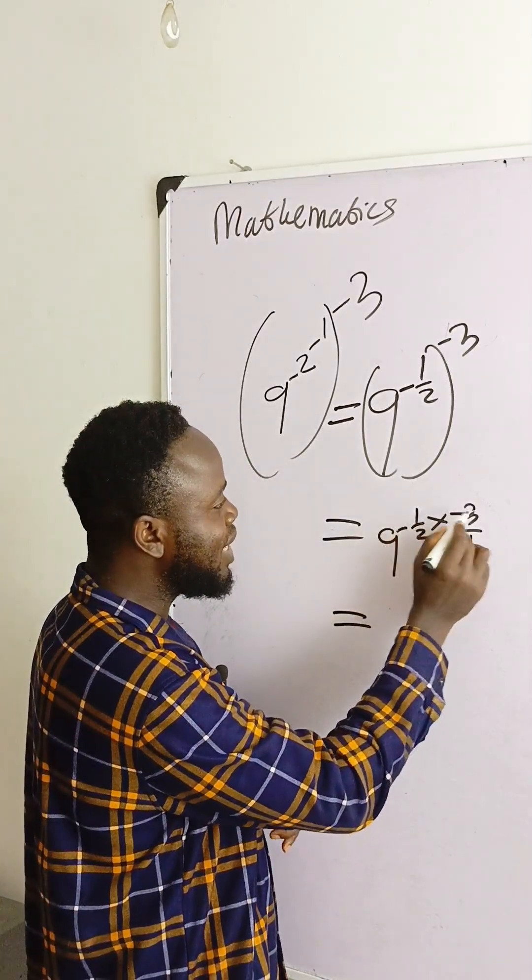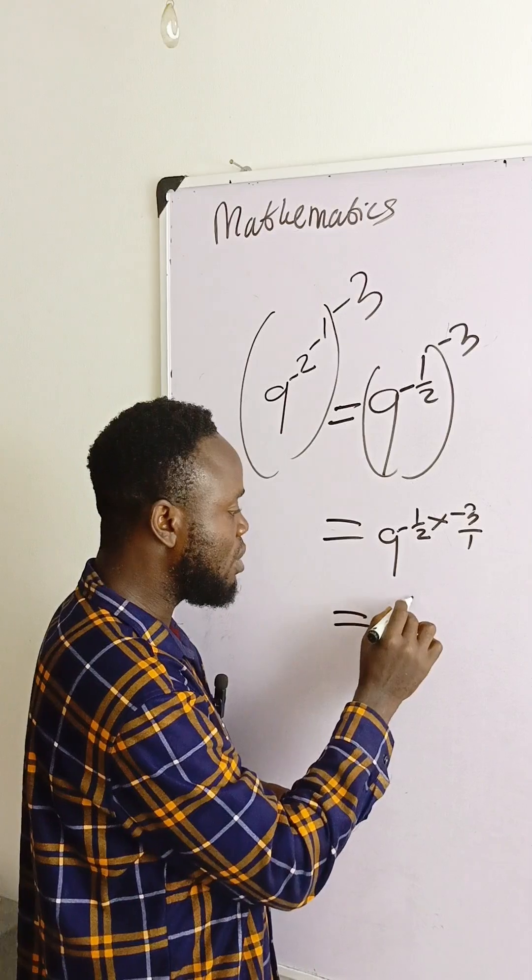And then we say 1 times 3 is 3, so we have now 9 raised to power 3 over 2.